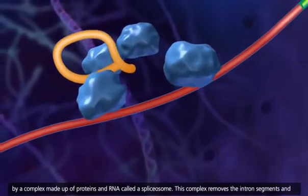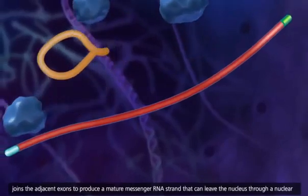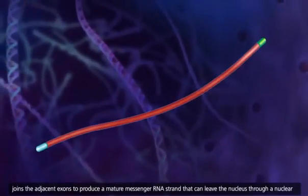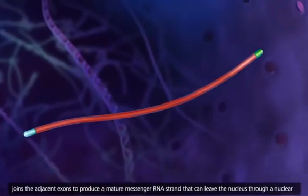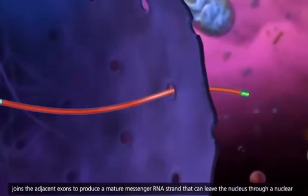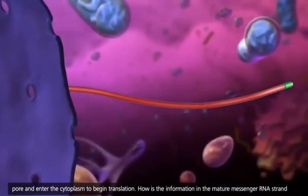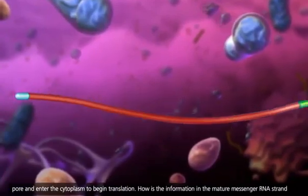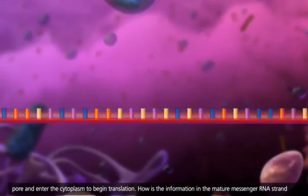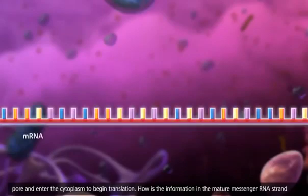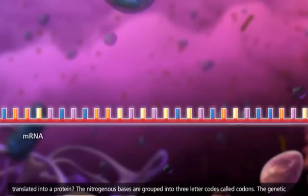This complex removes the intron segments and joins the adjacent exons to produce a mature messenger RNA strand that can leave the nucleus through a nuclear pore and enter the cytoplasm to begin translation. How is the information in the mature messenger RNA strand translated into a protein?